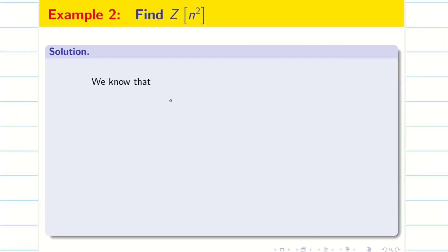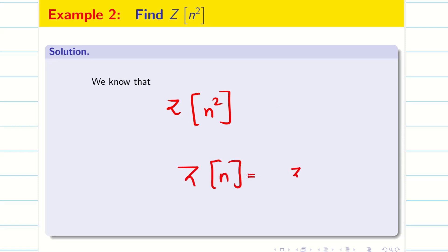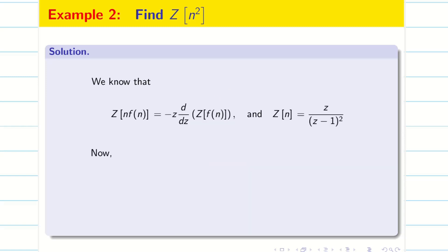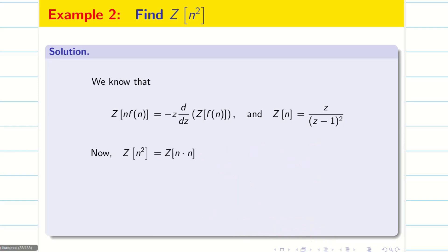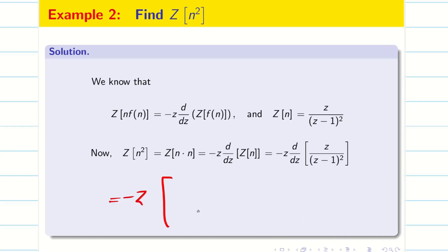Next, we are going to find higher powers of n using this property. We are going to find Z of n². We know Z of n is Z divided by (Z minus 1) whole square. Applying the property, Z of n² becomes minus Z d/dz of Z of n. We know the answer for Z of n from video 3, so we write it as Z by (Z minus 1) whole square. Again we apply the U by V rule and get minus Z in the numerator, with denominator (Z minus 1) whole power 4.